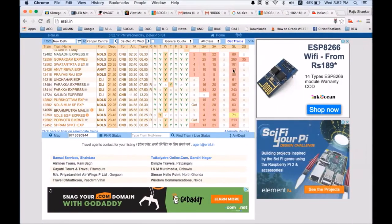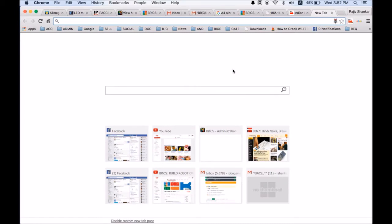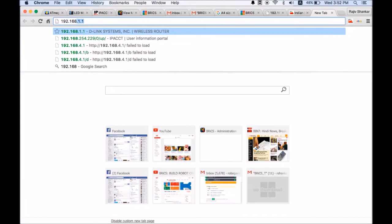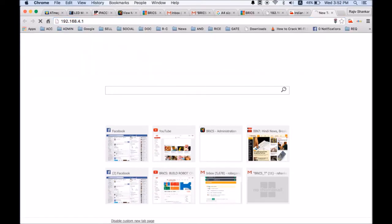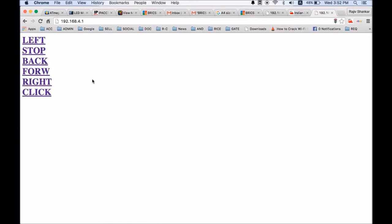After connecting, go to your browser and open a page with IP address 192.168.4.1. In this page you will see few options or links: left, stop, back, forward, right, and click.